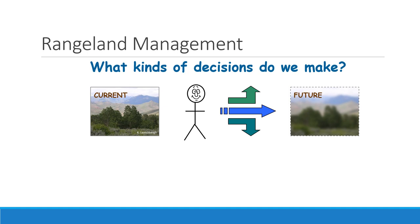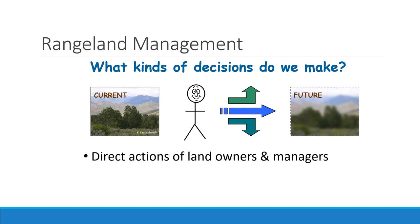What could you do to help get from where you are to where you think the land should be? When we talk about range management, we can make direct actions on the land — mostly landowners and land managers who might change a grazing prescription, do a prescribed fire, or control some invasive plants. Those direct actions on the land can be informed by both science and tradition.